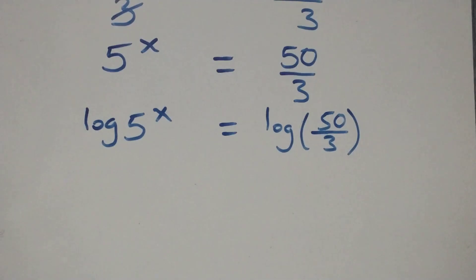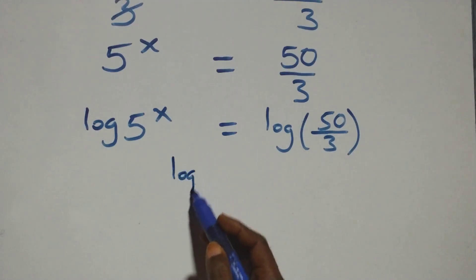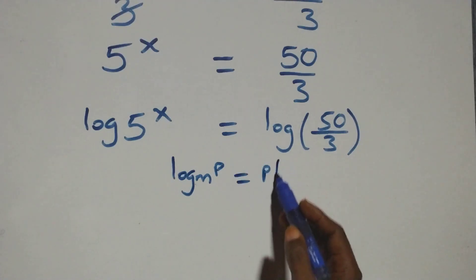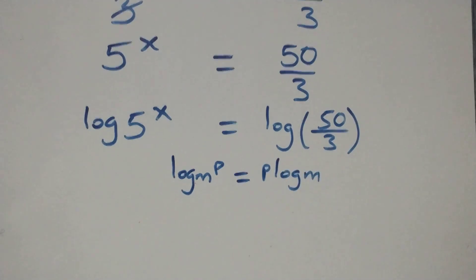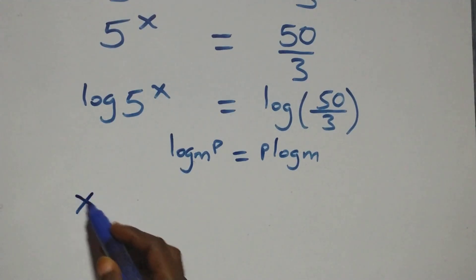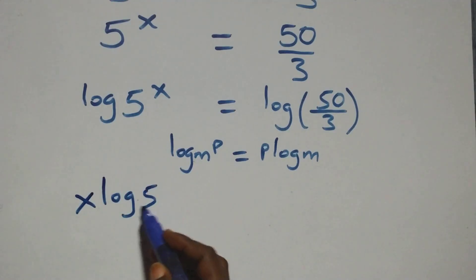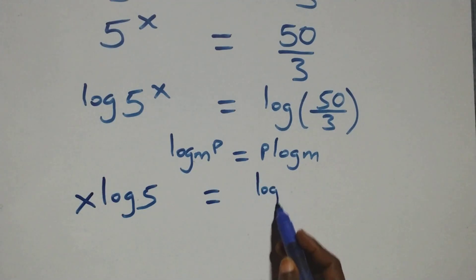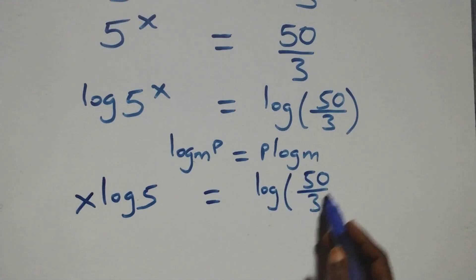We apply the power rule of logarithms: log m raised to power p is the same as p times log m. So we have x times log 5 equals log of 50 over 3.